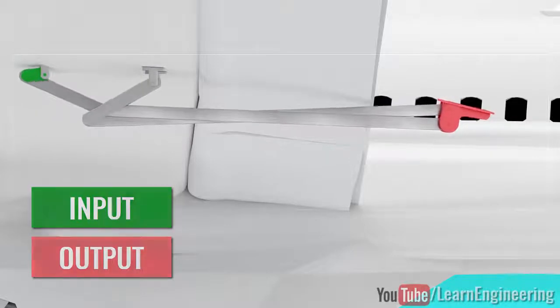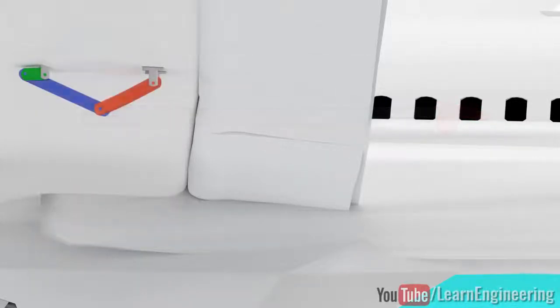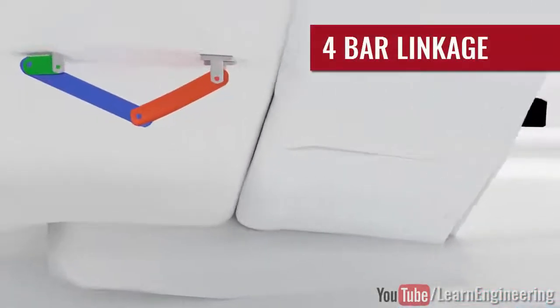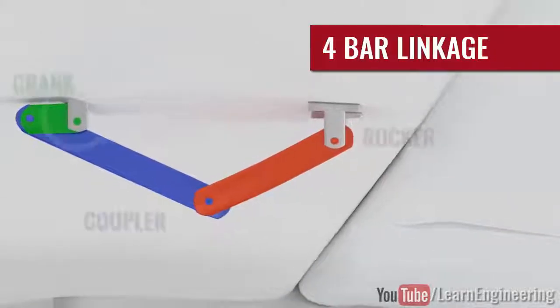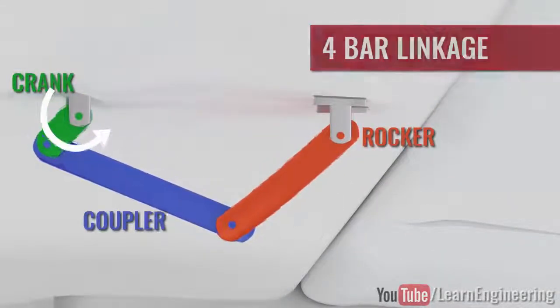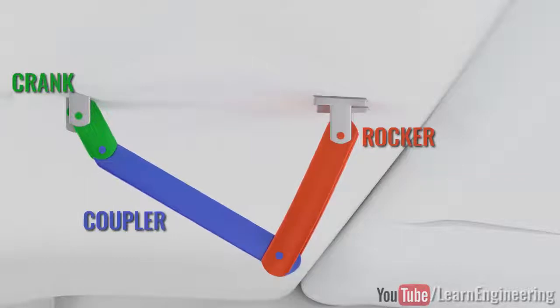Let's simplify the mechanism. This is basically a 4 bar linkage. When the input crank moves, the output rocker rotates as shown.